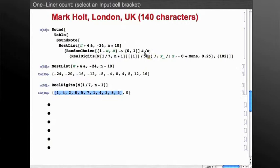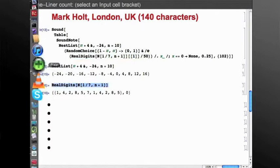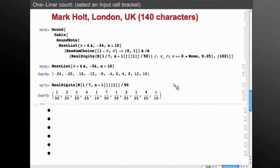Divide by 50, let's pull out that expression here. When you divide by 50, you get a list of numbers between 0 and 1, which Mark used as probabilities.